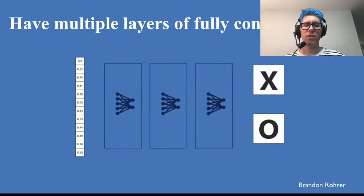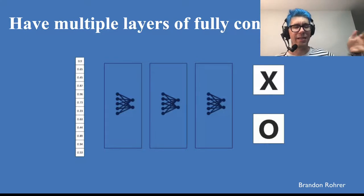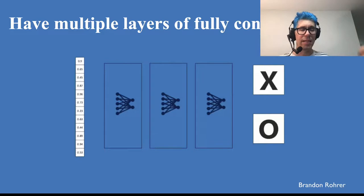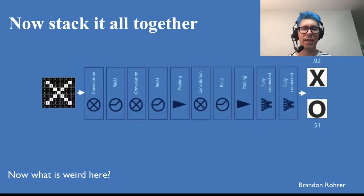And now, of course, it usually helps to have multiple layers of fully connected. So you can say, I want to take the output of the conv layers, I want to flatten it, and then I want to apply multiple fully connected layers to that.